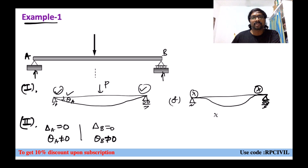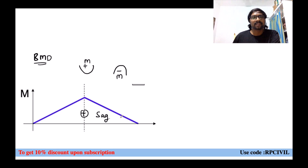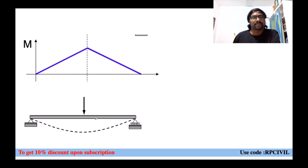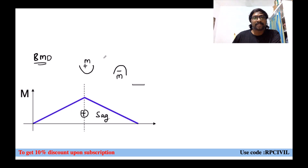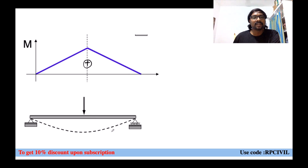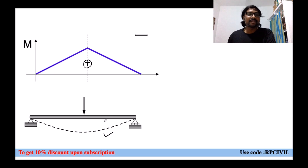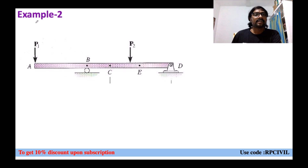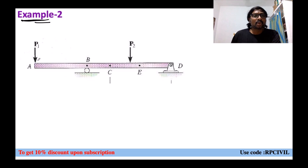So the second diagram is not correct. The first diagram is correct because the sagging bending moment diagram gives convexity downward for the deflection profile. Consistency is maintained with the bending moment diagram. Now second example: overhanging beam with load on the overhang portion and load on the central portion.